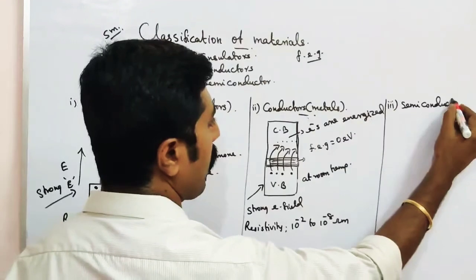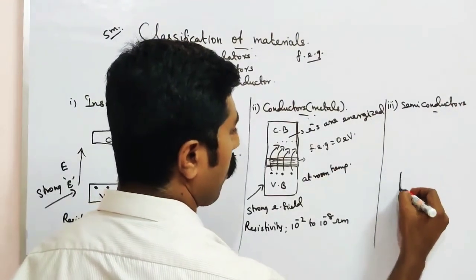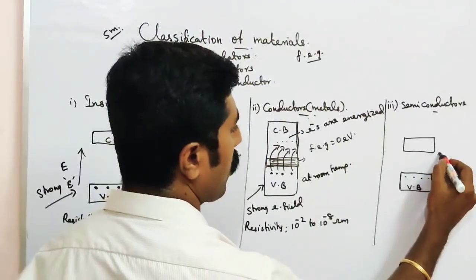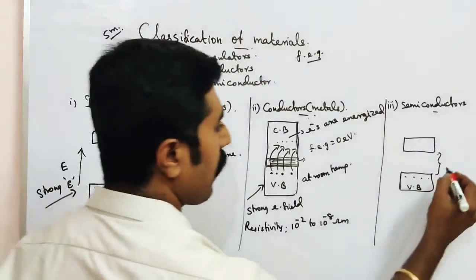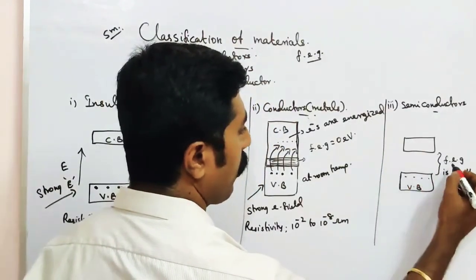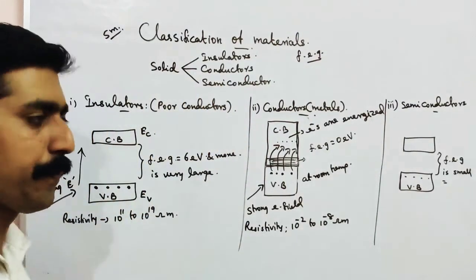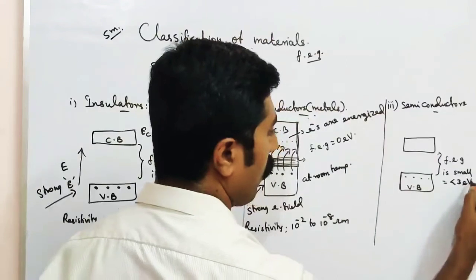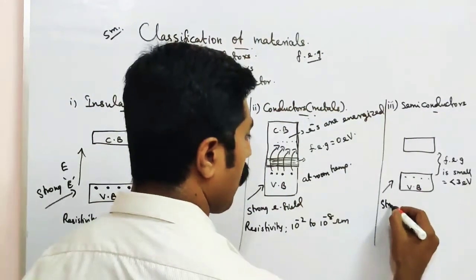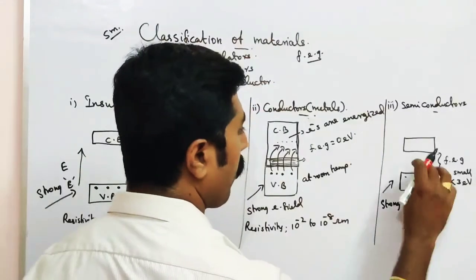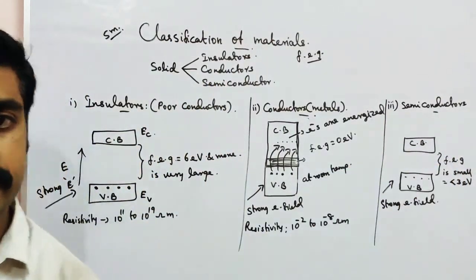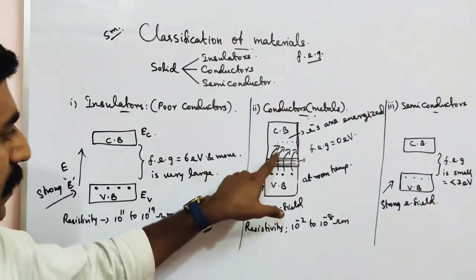The third type is semiconductors — they are partially conductors. In the energy band diagram, there is a valence band and a conduction band with a small forbidden energy gap. For insulators the gap is very large, but for semiconductors the forbidden energy gap is small — less than 3 electron volts. If we supply external energy through a strong electric field, we can reduce the space between the valence band and the conduction band, and electrons can move from the valence band to the conduction band.